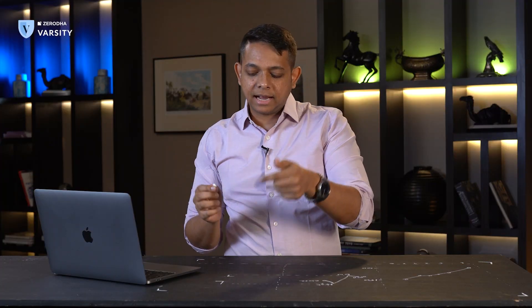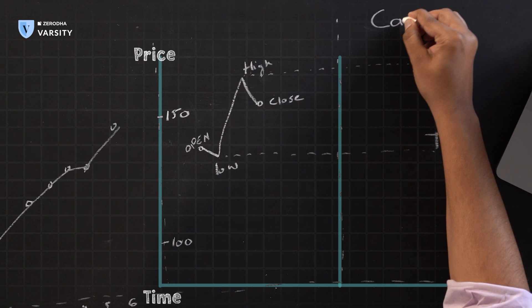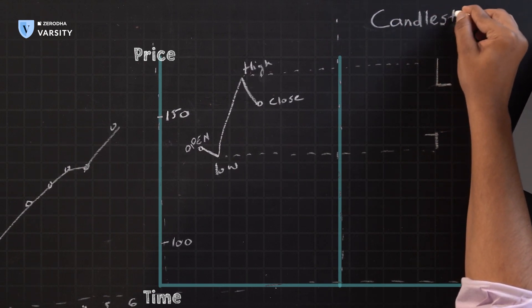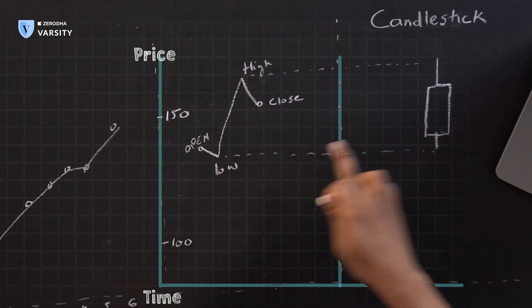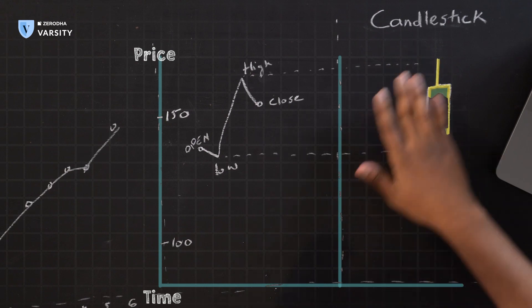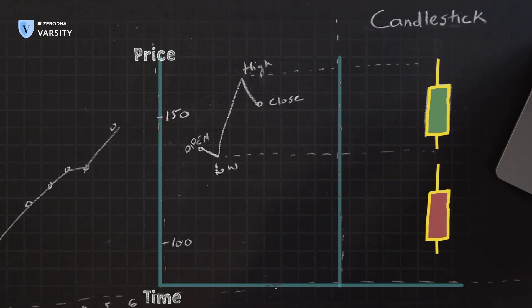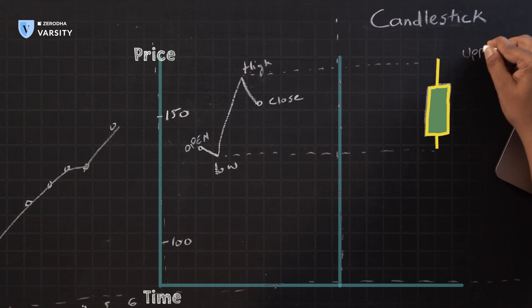Let's understand the anatomy of a candlestick bar on the blackboard. The high and low is exactly the same as before, except the distance between the open and close is filled as a candle. If it's a bullish day — the close is higher than the open — the candle turns green. If it was a bearish day — the close is lower than the open, meaning prices were pushed down during the day — that bar turns red. The top is called the high, also called the upper wick or upper shadow.